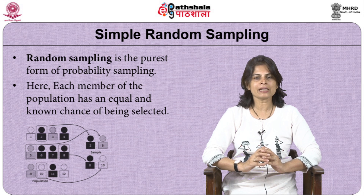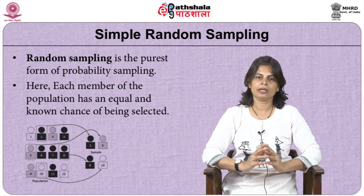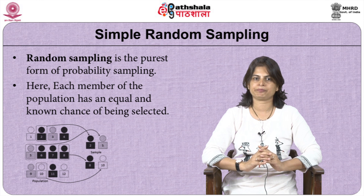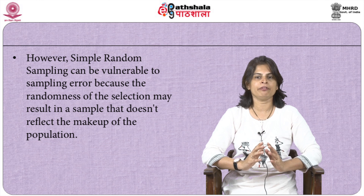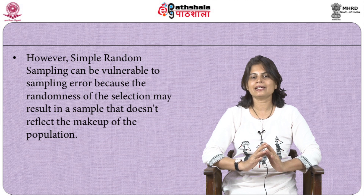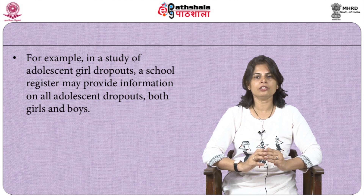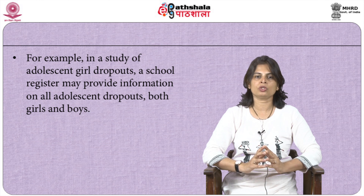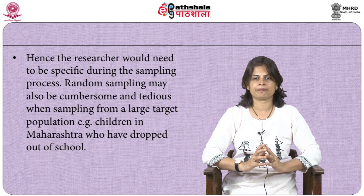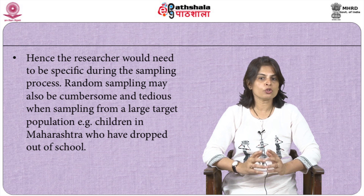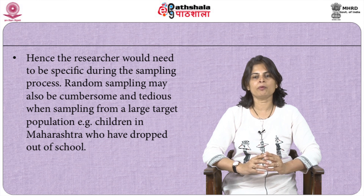Let us see the basic and foremost — simple random sampling. Random sampling is the purest form of probability sampling, where each member of the population has an equal and known chance of being selected. However, simple random sampling can be vulnerable to sampling errors because the randomness of selection may result in a sample that does not reflect the makeup of the population. For example, in a study of adult girl dropouts, a school register may provide information on all dropouts — both girls and boys — so the researcher would need to be specific during sampling.